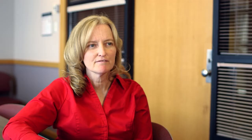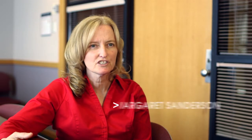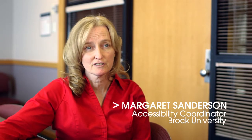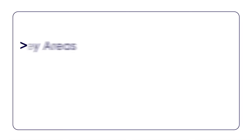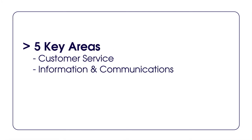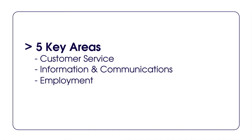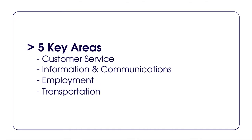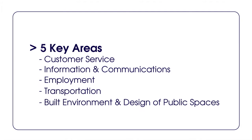The AODA involves a series of standards and regulations that are going to affect change at Ontario universities. The AODA covers removing barriers in about five key areas: how we provide service to people with disabilities, how we provide information and communication, employment, transportation, and how we build our buildings and our public spaces.